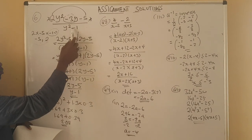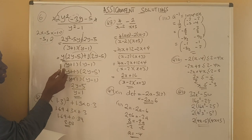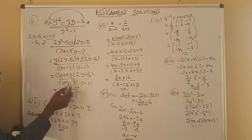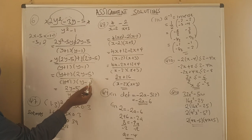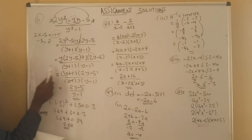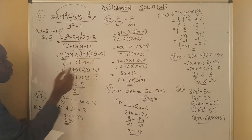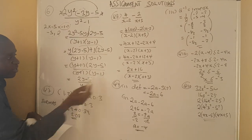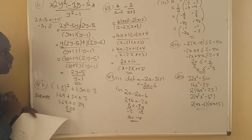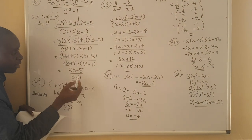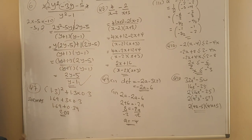For the denominator, y squared minus 1 is factorized as a difference of two squares to give y plus 1 times y minus 1. We now have y plus 1 times 2y minus 5 over y plus 1 times y minus 1. We cancel the common factor y plus 1, and we remain with 2y minus 5 over y minus 1. That is the correct answer. We need to practice these kinds of questions as they appear more frequently in examinations.